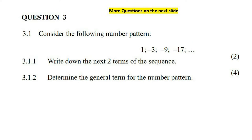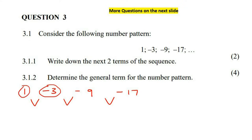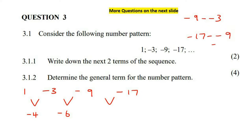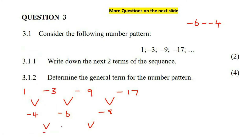So, we have 1, minus 3, minus 9, minus 17. We need to see what the differences will be. To work out the difference, you always take the number on the right minus the one on the left. So, that's going to be negative 4. Then minus 9 minus minus 3 becomes minus 6. And then minus 17 minus minus 9 becomes minus 8. Going to the second difference: minus 6 minus minus 4 gives negative 2, and the next also gives negative 2. Because the second row is remaining constant, this is a quadratic number pattern.